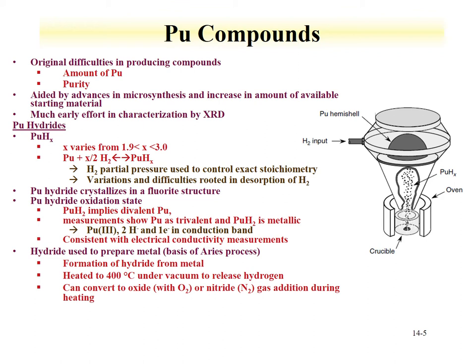Some properties of plutonium hydride are exploited in processing. The ARIES process treats plutonium metal with hydrogen, forming plutonium hydride which flakes away from the metal. The hydride in the crucible is heated to 400°C under vacuum, the hydrogen is released, and the metal is reformed. This is a way of taking a shape that may have classification issues and converting it into metal with a shape that is not classified, with criticality safety controls.